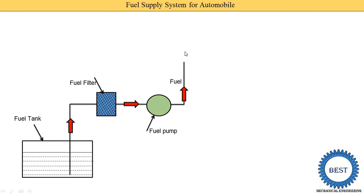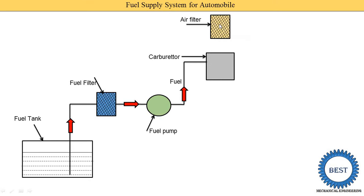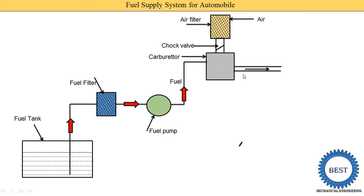From the fuel pump, the fuel is supplied to the carburetor. In the carburetor, two things are mixed — one is the air and the second one is the petrol. This diagram is for the SI engines. When we use the carburetor it is for an SI engine, means spark ignition engine, means a petrol engine. An air filter is provided and air is input. The air filter removes the dust particles from the air and this air is further supplied to the carburetor.